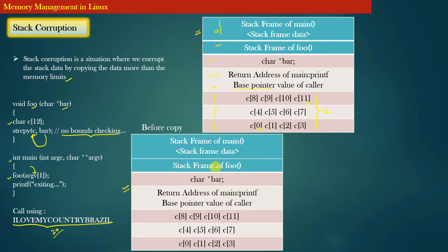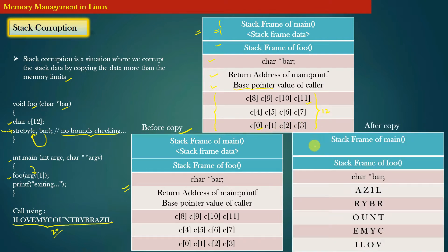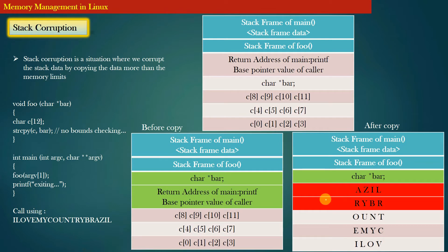The moment the copy instruction executes, the stack frame looks like this. The string gets copied into stack memory. The legal memory you were allowed to use was only 12 bytes, but since you copied 20 bytes, you copied 8 bytes extra. By copying these 8 extra bytes, you have corrupted the return address and the base pointer value stored in the stack frame — they are overwritten by user data.